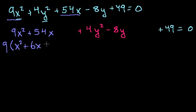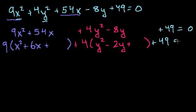So this is the same thing as 9 times x squared plus 6x. I'm going to add something else here, but I'll leave it blank for now. Plus 4 times y squared minus 2y. I'm probably going to add something here, too, so I'll leave it blank for now. Plus 49 is equal to 0.